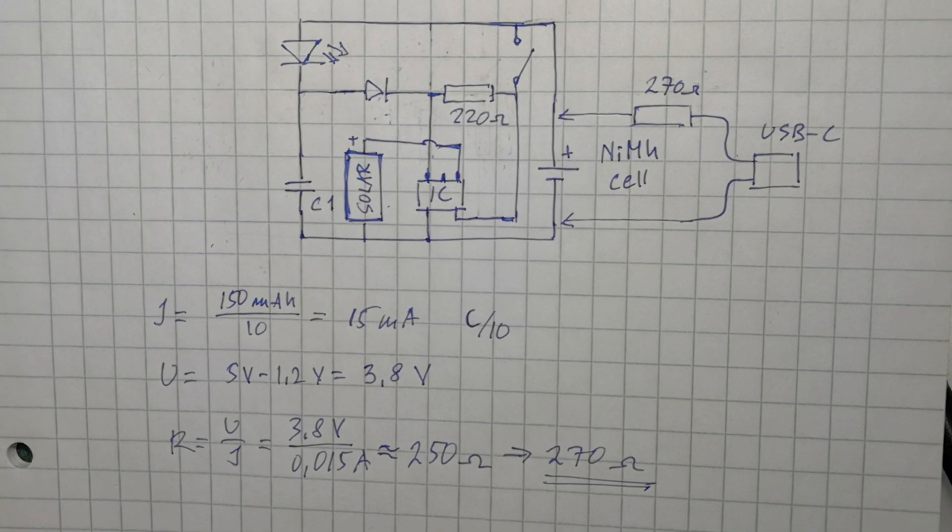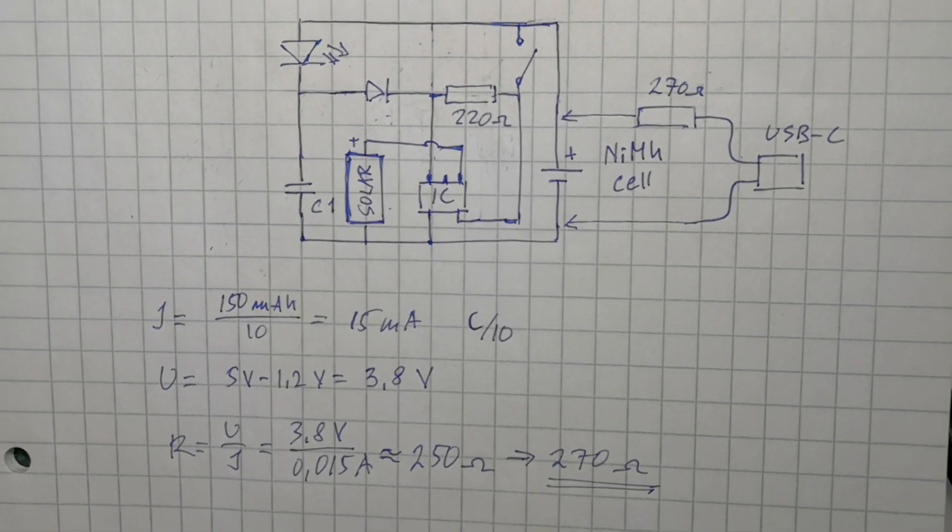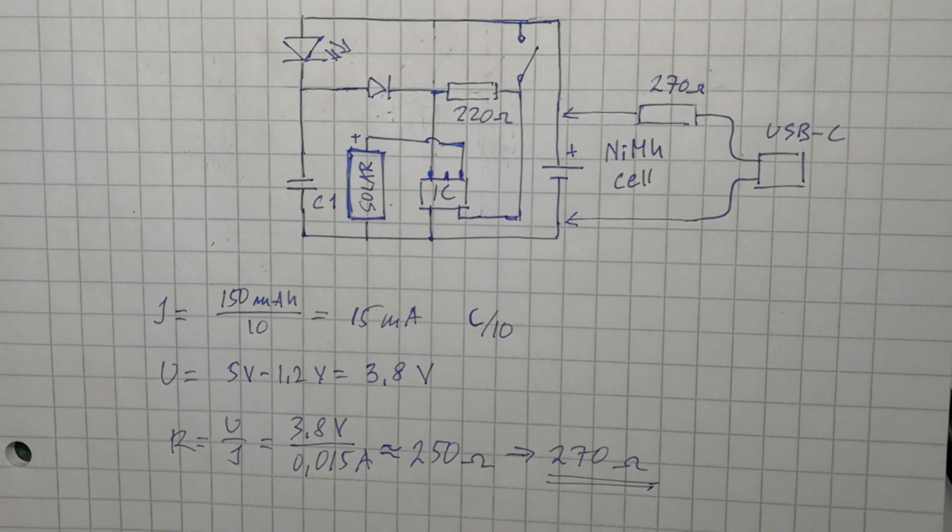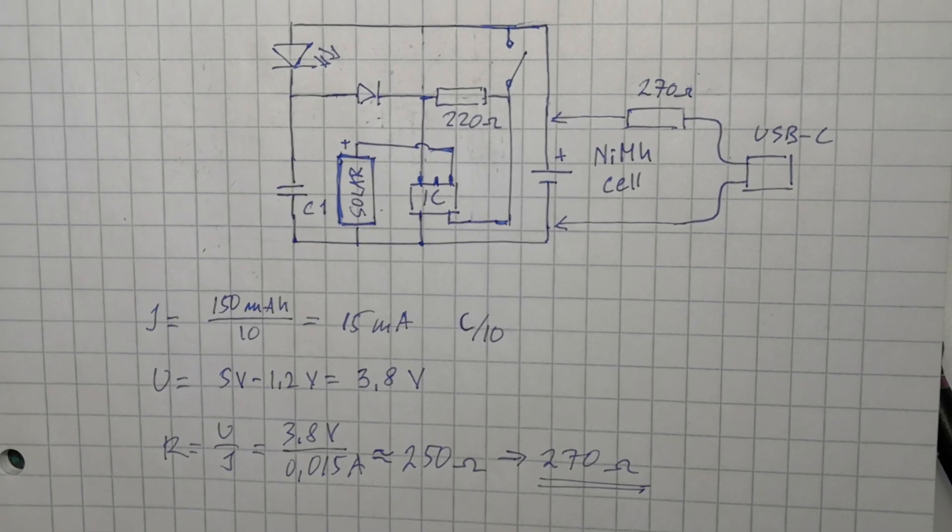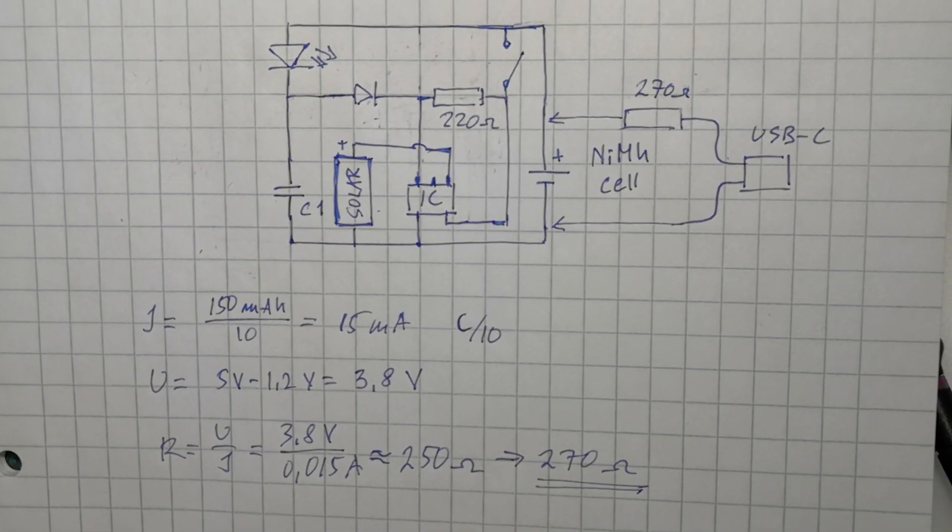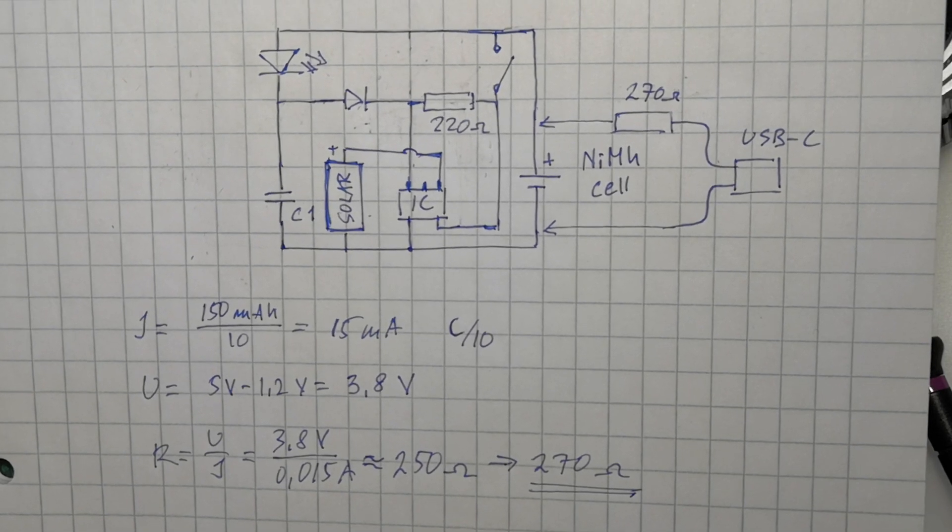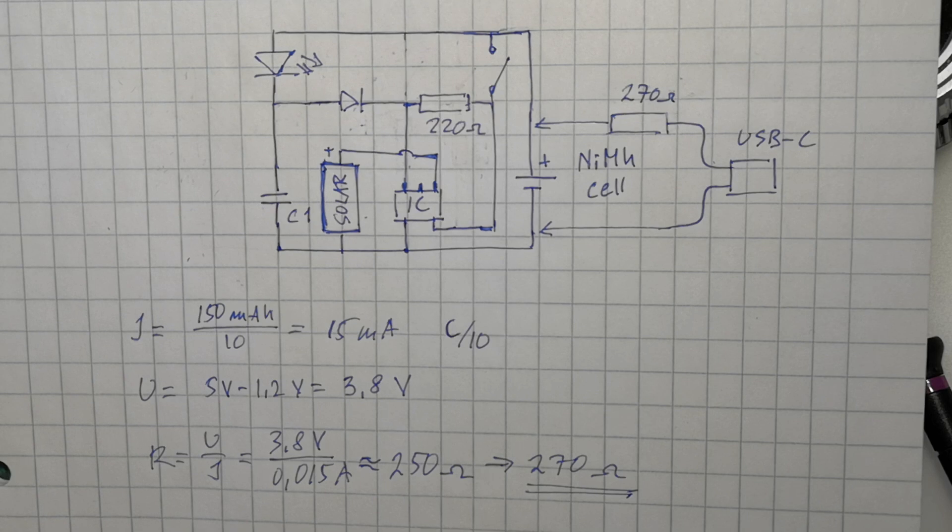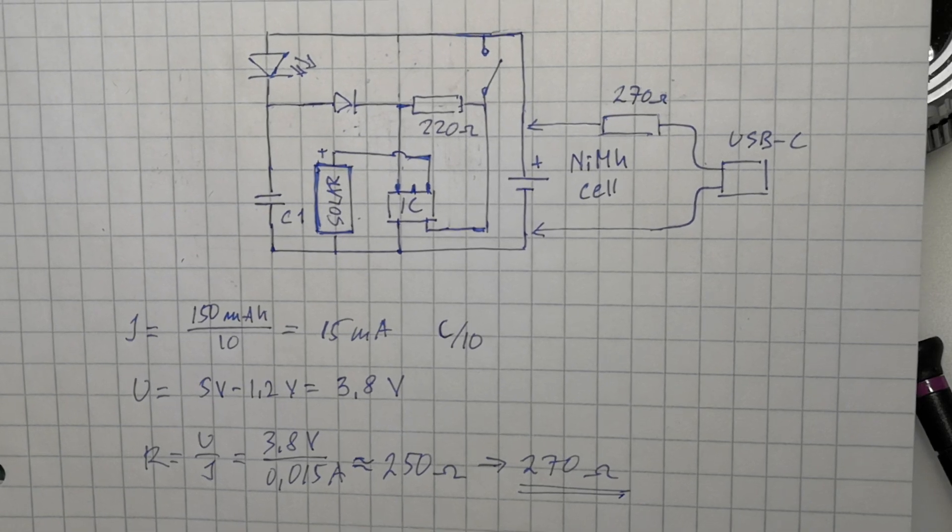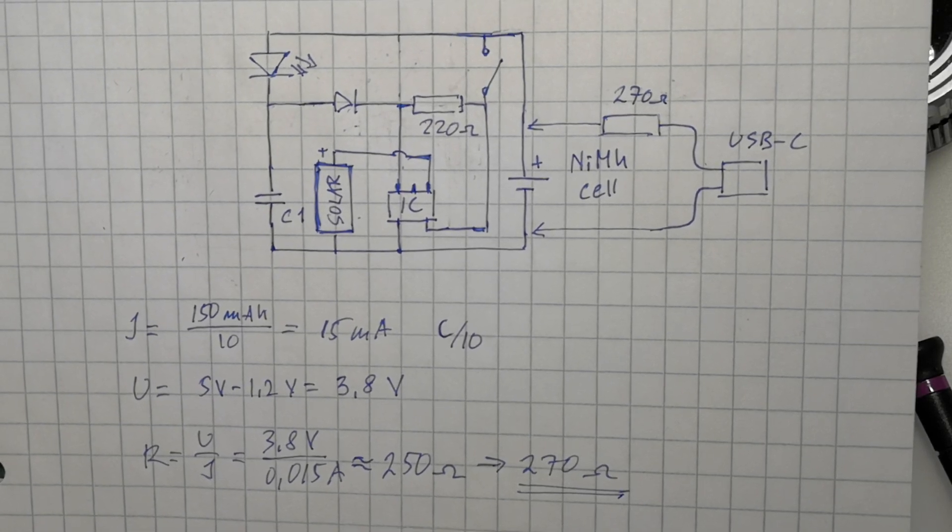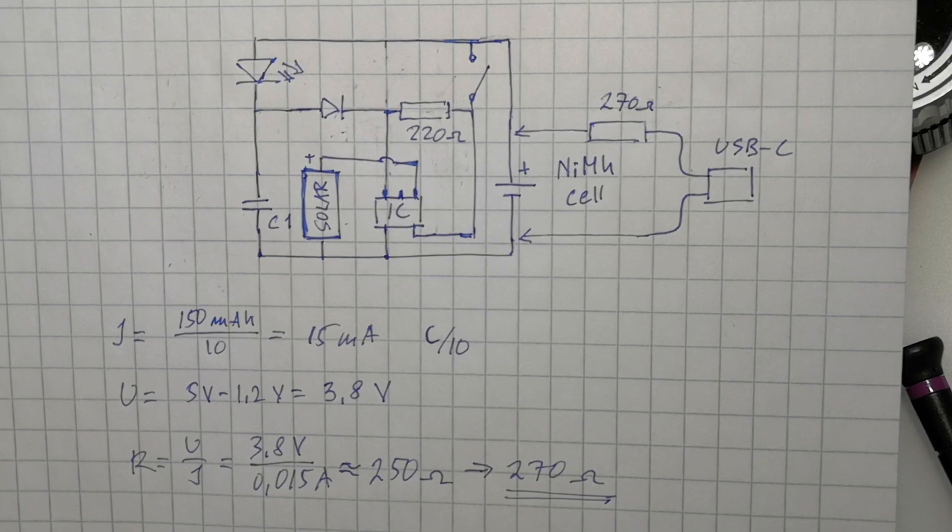We set the charging current to one-tenth of the battery capacity, resulting in 15 mA. We need a 3.8 volt voltage drop, achieved with a standard 270 ohm resistor. The charging time for the battery is long, but I don't have any other suitable charge controller. You can charge nickel metal hydride batteries indefinitely as long as the current is low enough.